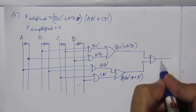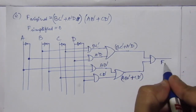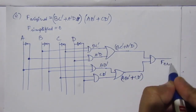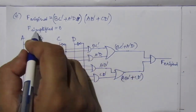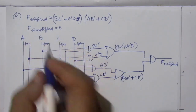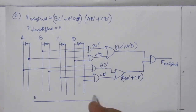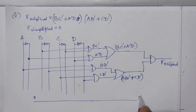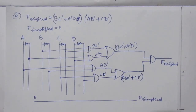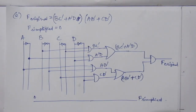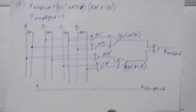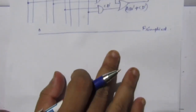For F simplified, since it equals 0, connect a zero line directly to F simplified. This completes part E.